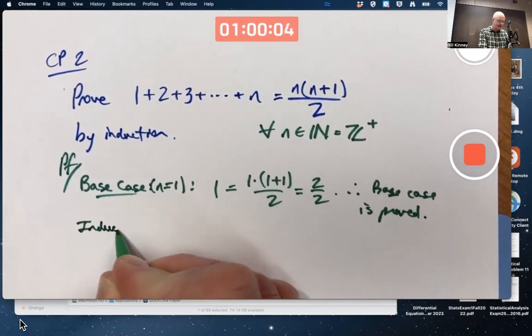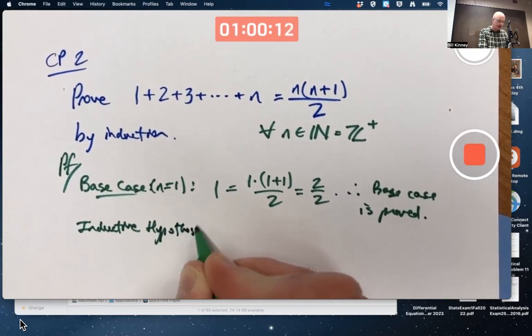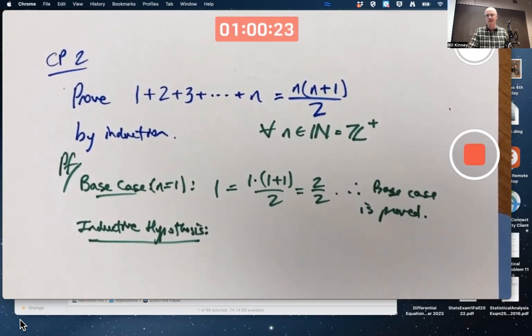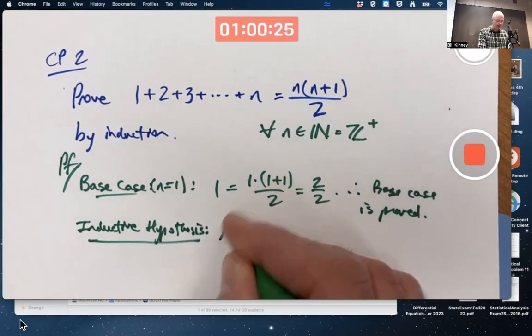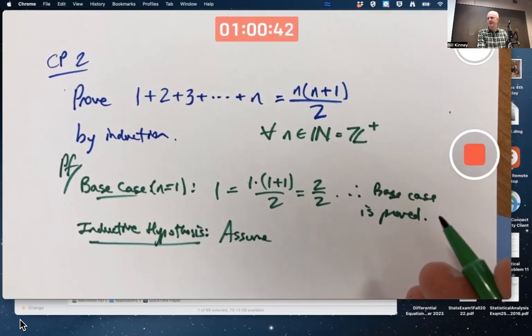The next thing is the inductive hypothesis. I probably prefer calling it inductive hypothesis, but if you call it inductive step, that's fine. It is important to say either assume or suppose here at the start. Assume that this equation is true for some positive integer. What should we call the integer? Should we call it n? Should we call it k? It doesn't really matter. Maybe it's better to use a different letter.